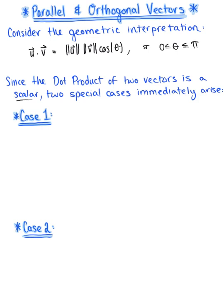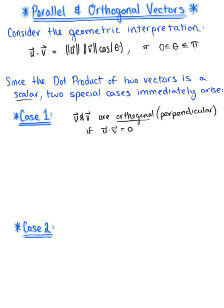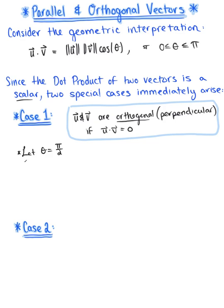We can say that vector u and vector v are orthogonal — which is just another word for perpendicular — if their dot product is 0. This is a new definition: two vectors are orthogonal if their dot product is 0. To help us better understand where this comes from, let's think about a graphical representation. We'll let theta be 90 degrees, or pi/2 radians.